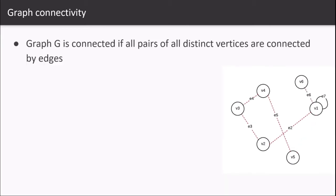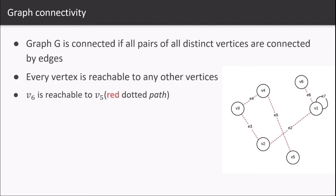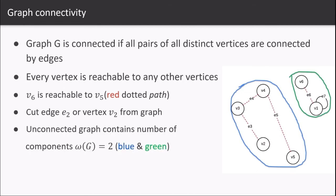A graph G is connected if all the pairs of distinct vertices are connected by edges, so every vertex is reachable to every other vertex in the network. For example, the red dotted path shows that v6 is reachable to v5.